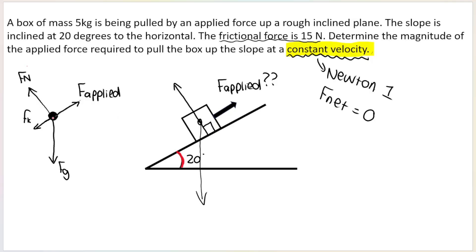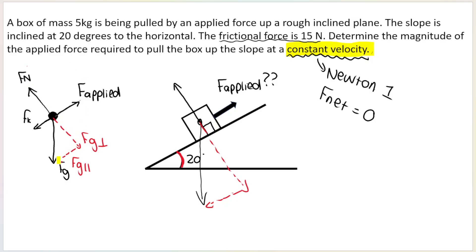We have a perpendicular component, FG perpendicular, and a parallel component, FG parallel. FG perpendicular is perpendicular — 90 degrees — to the slope, and FG parallel is parallel to the slope. Another thing to remember: FN and FG perpendicular are always in the same straight line, and FG parallel is always parallel to the slope, just like F applied and friction.